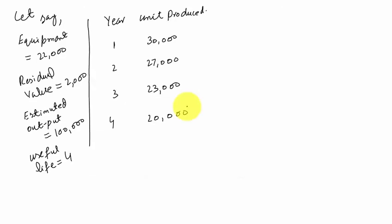Let me explain this method with the help of an example. Let's say an equipment has a cost value of 22,000, residual value is equal to 2,000, estimated output is 1 lakh, and useful life is 4 years.